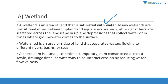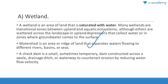Question 80: An area of land saturated with water is known as a wetland. A wetland is an area saturated with water; many wetlands are transitional zones between upland and aquatic ecosystems. A watershed is an area that separates water flowing to different river basins or seas. A check dam is a small, sometimes temporary dam constructed across a soil drainage ditch.